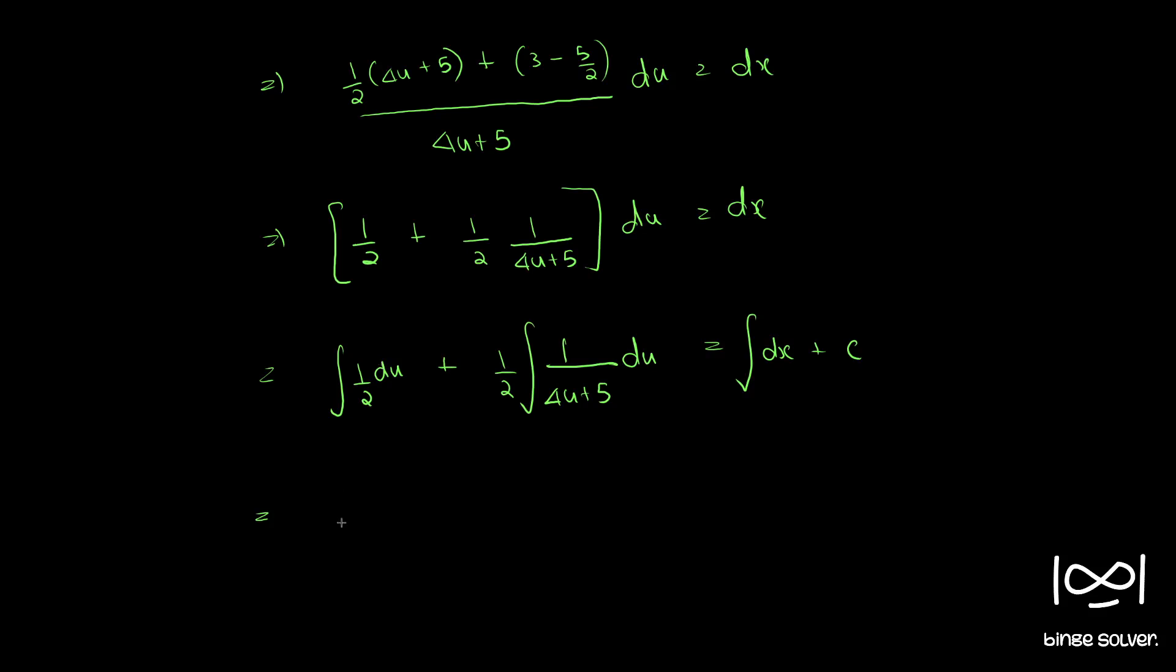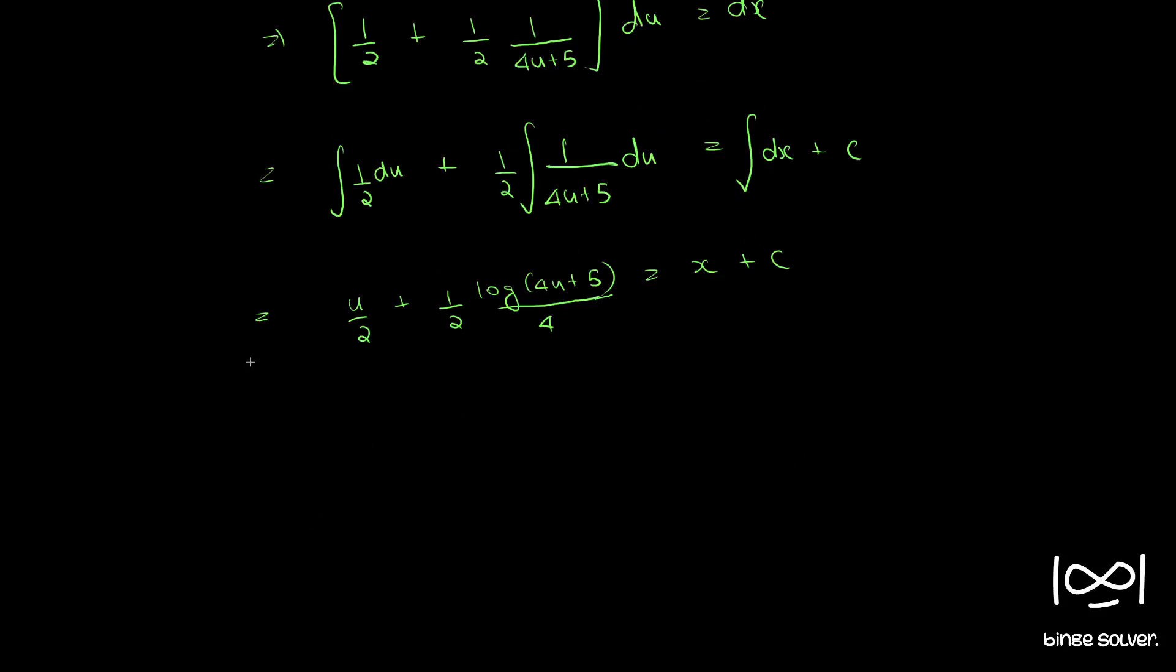Therefore, this is u by 2 and integral 1 by 2 for 4u plus 5 is 1 by 2 log 4u plus 5 by 4. That is equal to x plus c. So we multiply throughout by 8, we get 4u plus log 4u plus 5 equal to 8x plus c1.